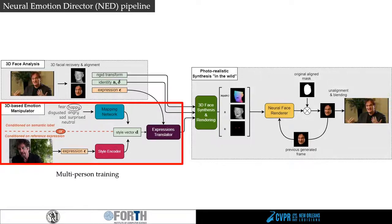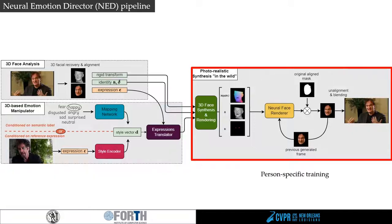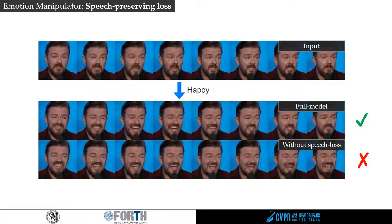The emotion manipulator is optimized using expressions from multiple videos of talking faces, while the face renderer is optimized independently for every new target actor in a self-reenactment fashion. During training of the emotion manipulator, we use a separate mouth loss, which helps preserve the lip movements.